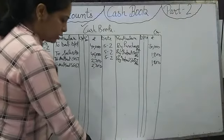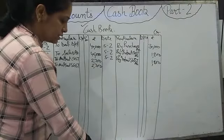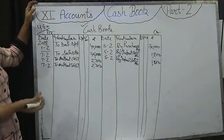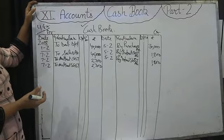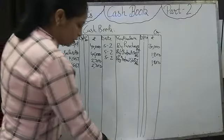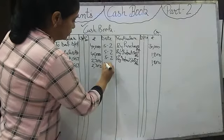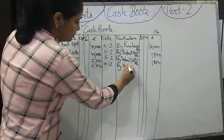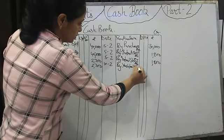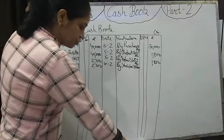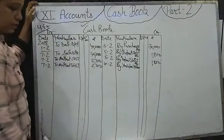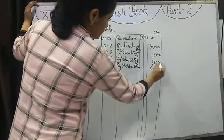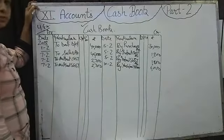Next transaction: paid to Yashlaal and Sons on account. We are paying them, so money is going. Date: 10th February. On the credit side, By Yashpal and Sons. How much? Rs. 6,000. We write 6,000 in the amount column.